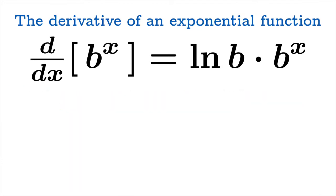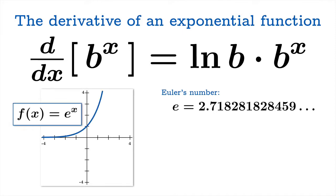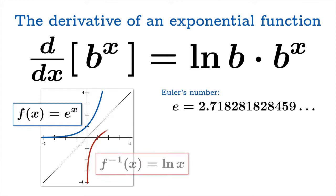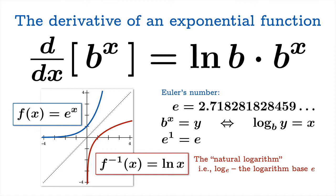Euler's number e, which is about 2.72 rounded to two decimal places, is a very special number that appears throughout mathematics in many different ways. For us, the exponential function base e — that's e to the x — is an invertible function, and its inverse is the logarithm base e, usually written as ln(x). This represents the log base e, the inverse of the exponential function base e. Recall that b to the x equals y is equivalent to saying log base b of y equals x. Also, e to the 1 equals e implies that log base e of e equals 1.